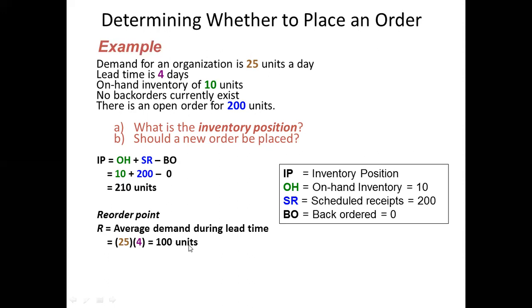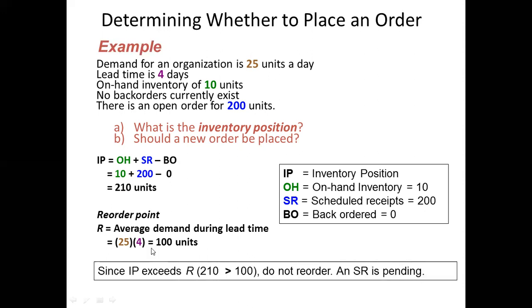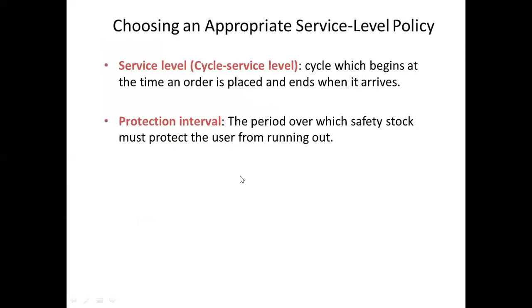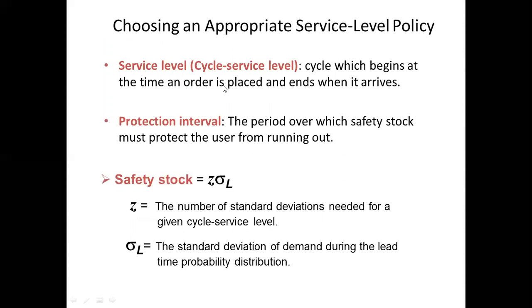That means 25 units into 400 units. We have to reorder the company at the same time. The inventory position exceeds R, so the inventory position is not a valid order trigger.